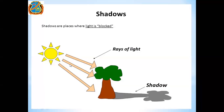The light falls on the tree and the tree blocks the light. Its shadow is formed. The shadow is dark because there is less light — no light — that is why it is dark. The tree's leaves are green and its stem is brown, but its shadow is dark. I hope you understand this.